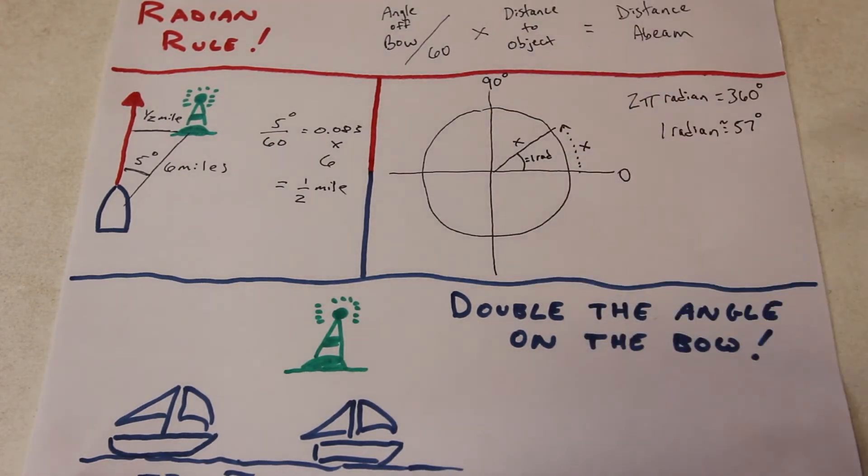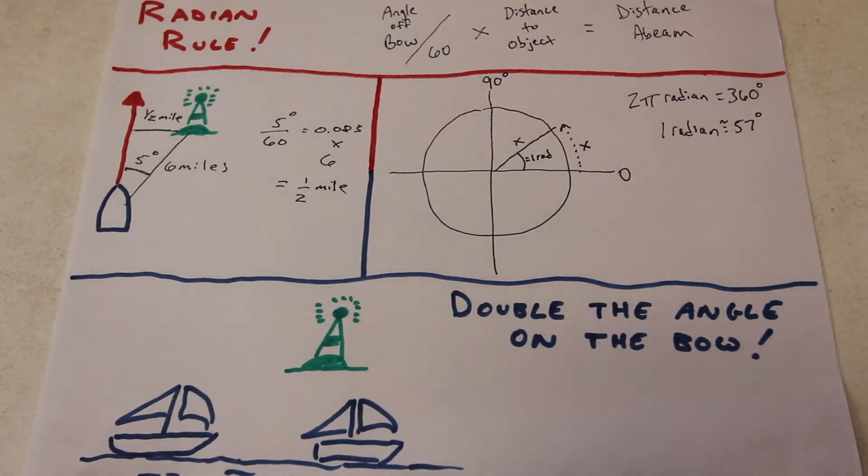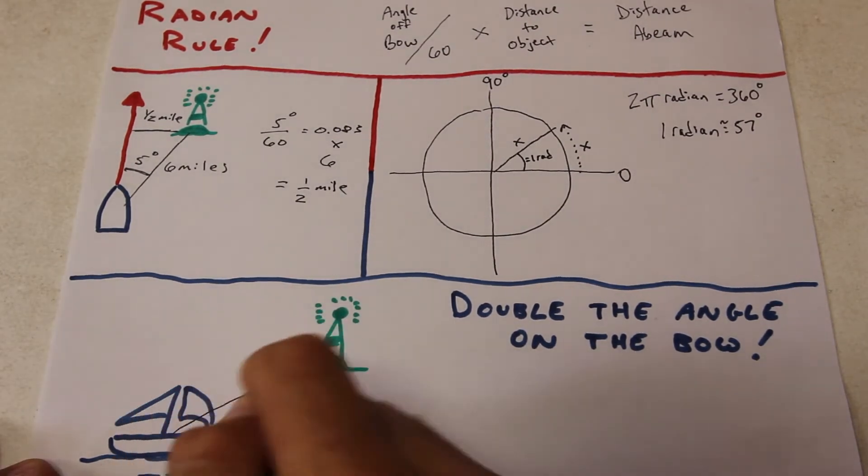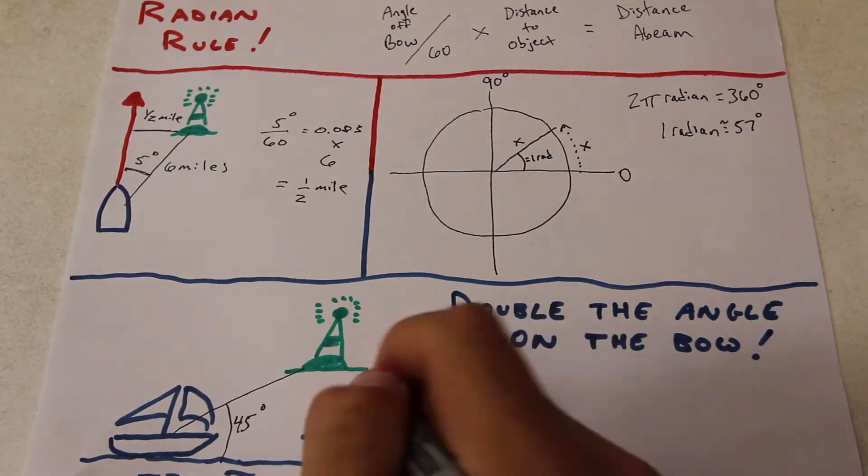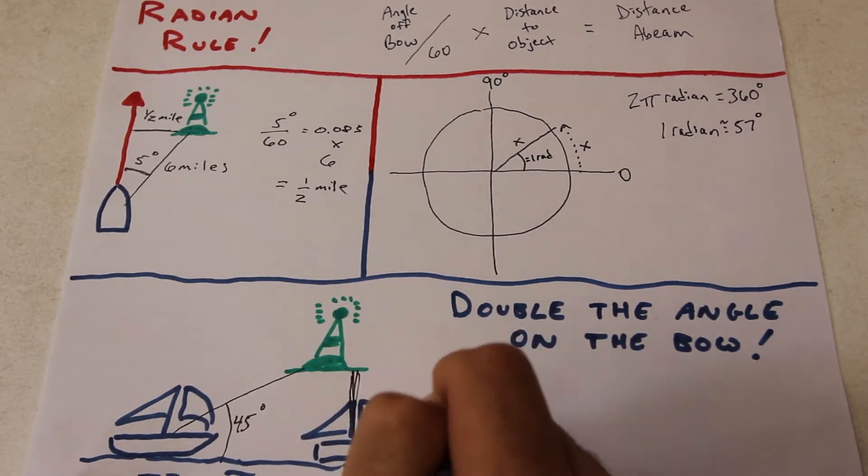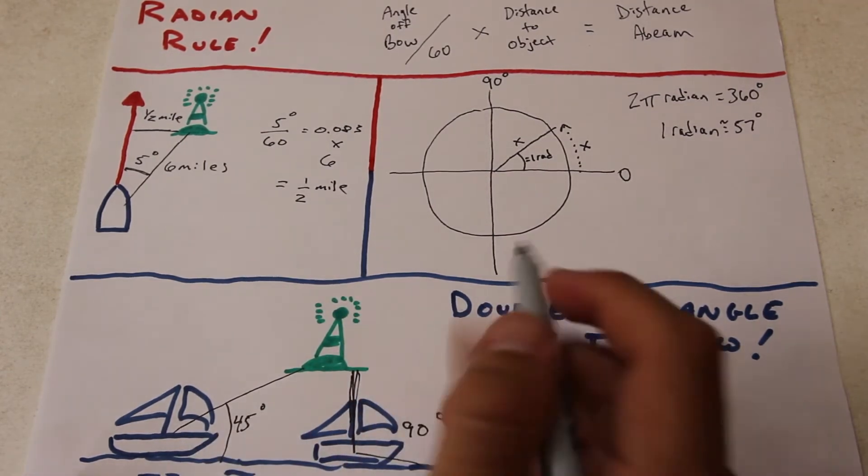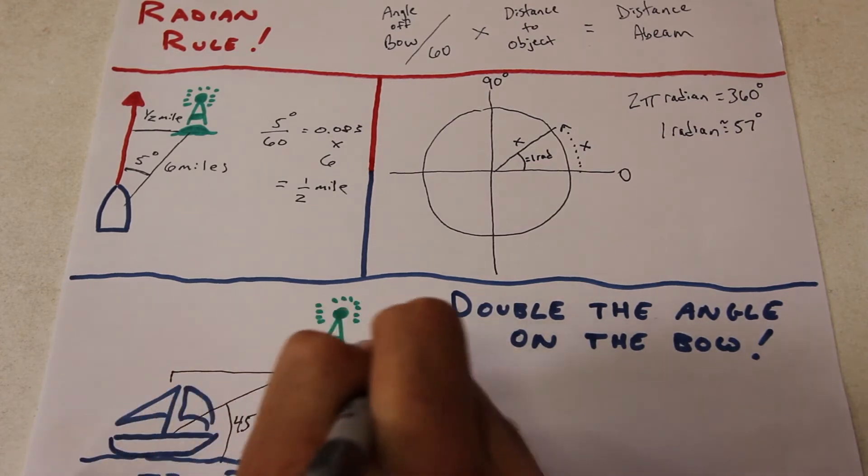Another similar technique is doubling the angle on the bow. In this case, if you shoot a bearing to an object and then wait until the angle doubles, the distance traveled will be equal to the distance off at closest point of approach.